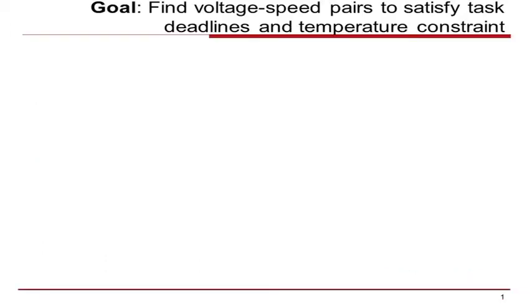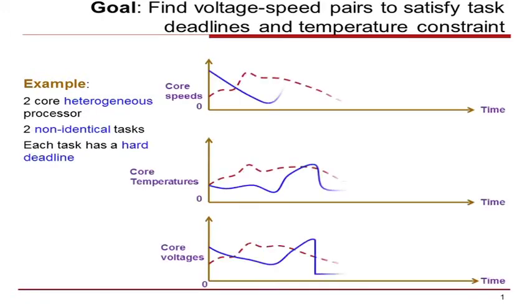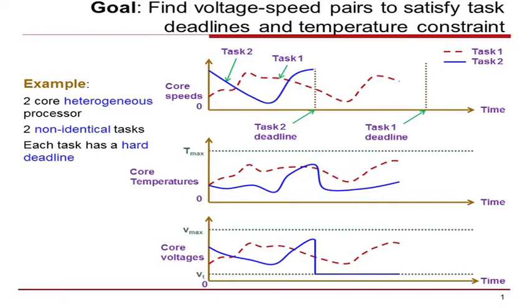We will begin with the problem description. Consider a simple example of a two-core heterogeneous processor executing two non-identical tasks with each task having a hard deadline. The goal is to determine a schedule of processor core speeds and voltages such that the task deadlines are met, the maximum temperature constraint is also satisfied, and the voltages are between the maximum limit and the threshold voltage.